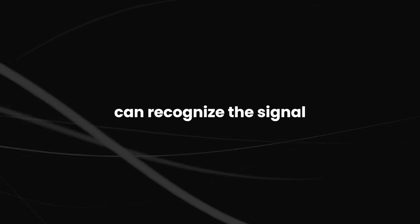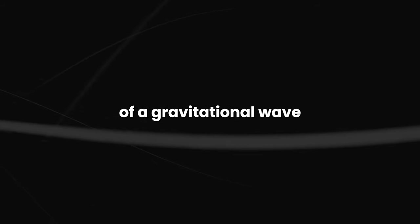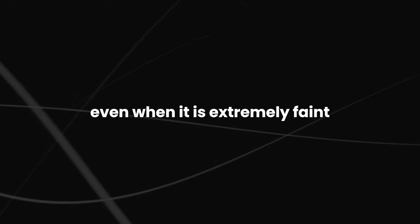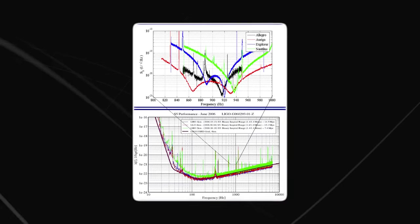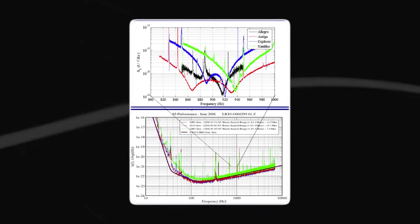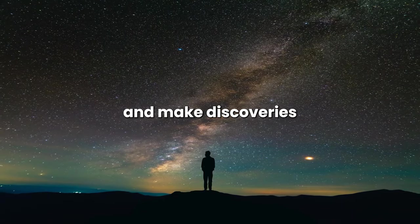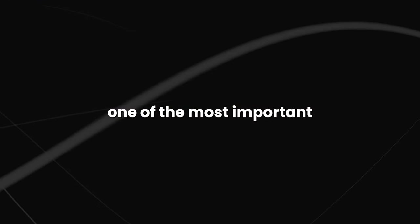The algorithms can recognize the signal of a gravitational wave, even when it is extremely faint. They can also separate the signal from the detector's background noise. This allows scientists to study gravitational waves in greater detail and make discoveries about the universe.